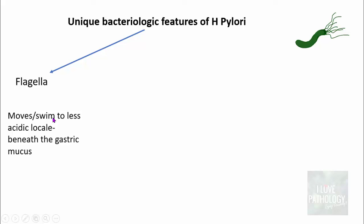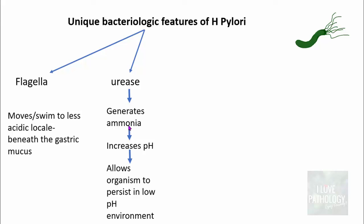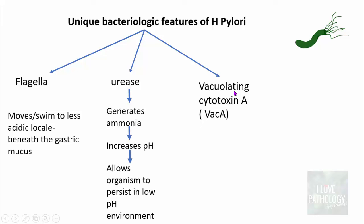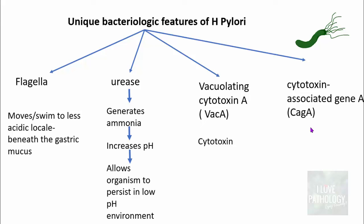The unique bacteriological features are: first, flagella, which are responsible for motility — allowing the organism to swim to the less acidic locale beneath the gastric mucus. Second is urease, which generates ammonia, increases the pH, and allows the organism to persist in the low pH environment. Third is vacuolating cytotoxin A, referred to as VacA — a cytotoxin. Fourth is cytotoxin-associated gene A, or CagA, which is basically pro-inflammatory and pro-proliferative.